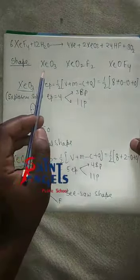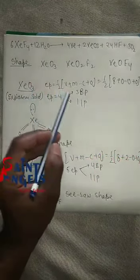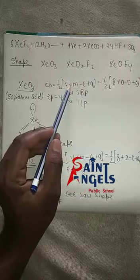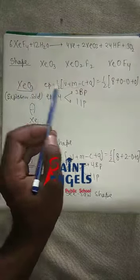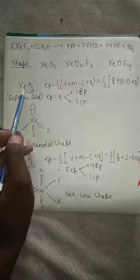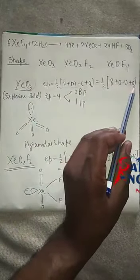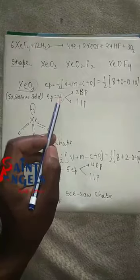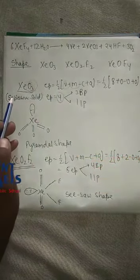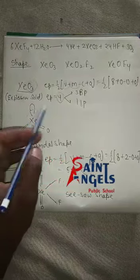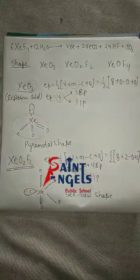Now let's talk about shapes. For XeO3: oxygen is a divalent atom so M equals 0. Electron pairs = half(V + M − C + A) = half(8 + 0) = 4. Out of 4 electron pairs, 3 are bond pairs and 1 is a lone pair. For 4 electron pairs the geometry is tetrahedral, and with one lone pair the shape becomes pyramidal. So XeO3 has a pyramidal shape and is an explosive solid.